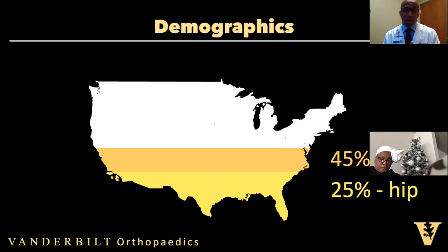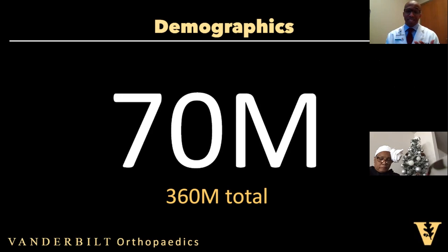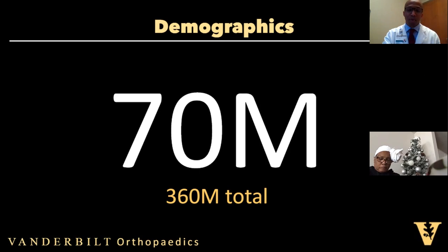Within our country, in any person's lifetime, there's about a 45% chance that an individual will have osteoarthritis of the knees and a 25% chance in the hips. At any one time, about 30 million individuals are dealing with osteoarthritis symptoms in the hip or knees. Out of 330 million in this country, what is also concerning is that by 2030, the estimate is that 70 million people will be dealing with osteoarthritis, related to a combination of aging and poor conditioning.